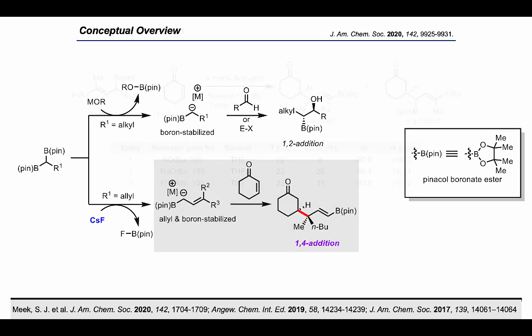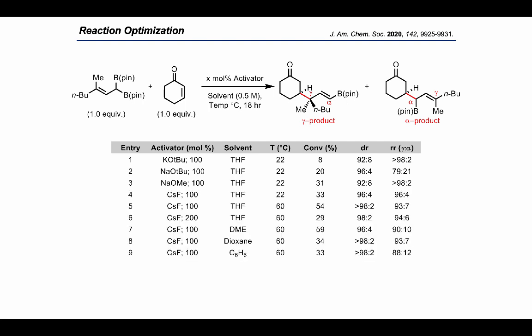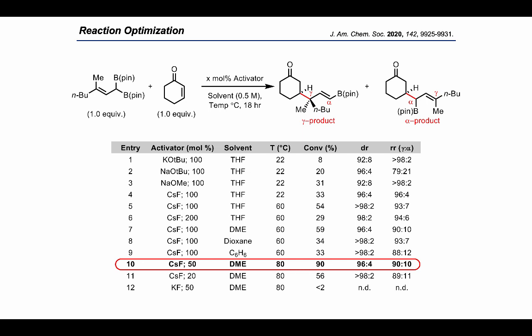With this in mind, we began our studies with a methyl and butyl substituted allyldibo­ron species and cyclohexenone. A key objective of our efforts was to develop a robust process that was not only efficient, but also highly diastereoselective and site-selective. Early control reactions established that there is no background reaction to either 1,2 or 1,4 addition products to worry about. A screen of various alkoxide activators at room temperature in tetrahydrofuran afforded modest product yields but with high diastereoselectivity and site selectivity. Competitive deprotonation was a significant issue, and switching to the less basic cesium fluoride resulted in improved yields.